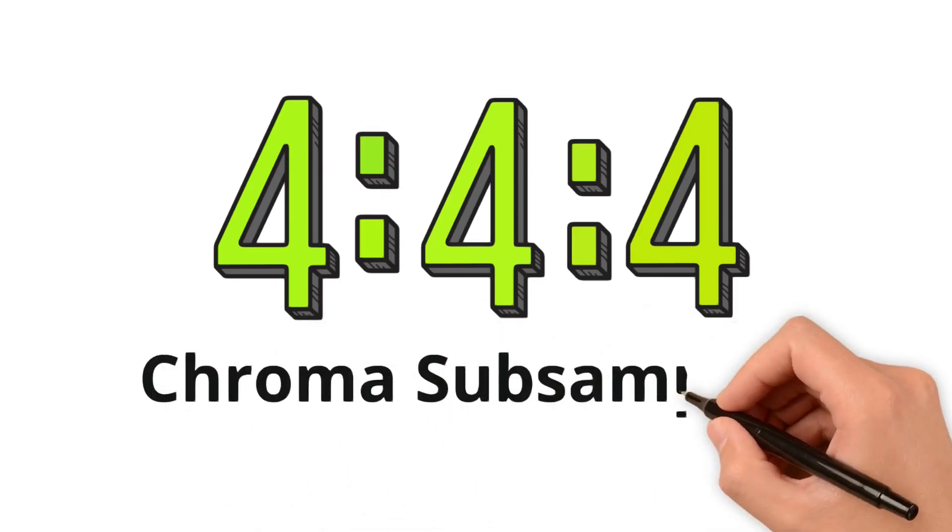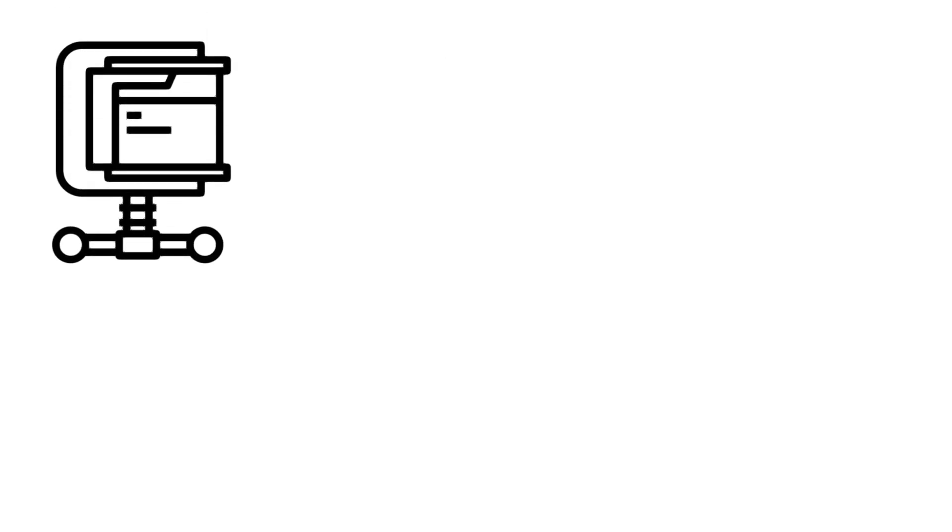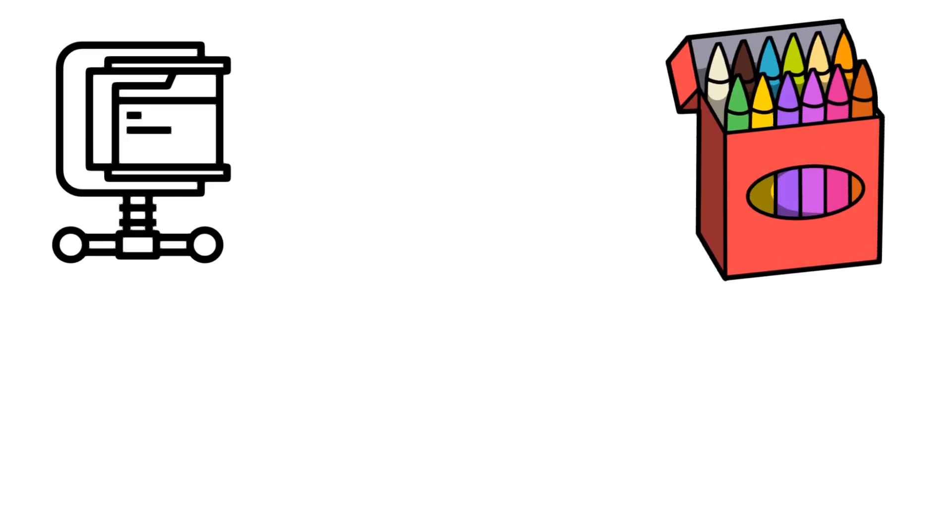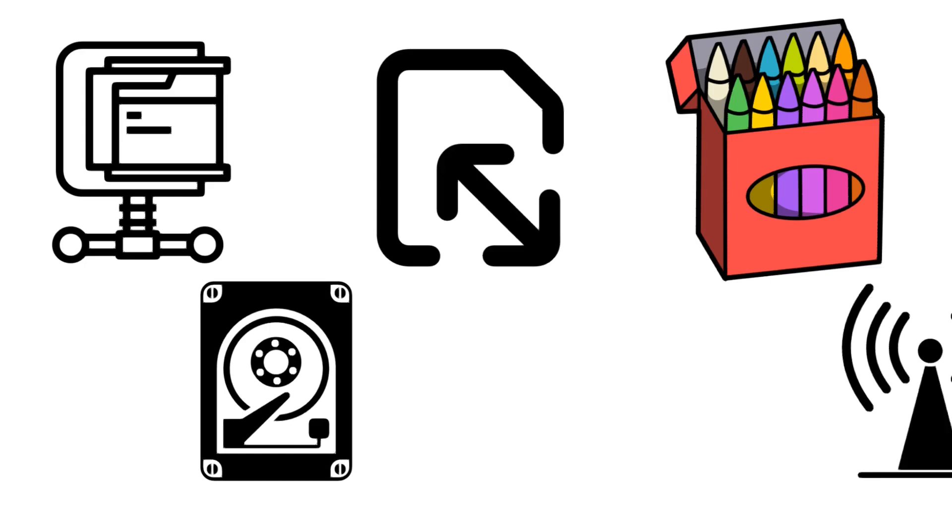First, let's break down what 444 means. This term refers to a type of chroma subsampling, a process used in the compression of video signals. Chroma subsampling is about reducing the color information in a video to make the file size smaller, which is crucial for storage and broadcasting.